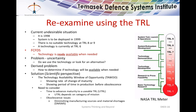Let's re-examine the situation. The undesirable situation: it's 1998, the system is to deploy in 1999, there's no suitable technology at level 8 or 9, but there is one at level 6. The Feasible Conceptual Future Desirable Situation (FCFDS) is that the technology is available when needed — not just ready, but available. Notice how we've changed the perception. The problem is the uncertainty: do we use the technology or look for an alternative? The derived problem is: we need to determine if the technology will be available when needed. The solution is in the scientific perspective — one solution is a Technology Available Window of Opportunity, showing the rate of change of maturity and the period in production before obsolescence.